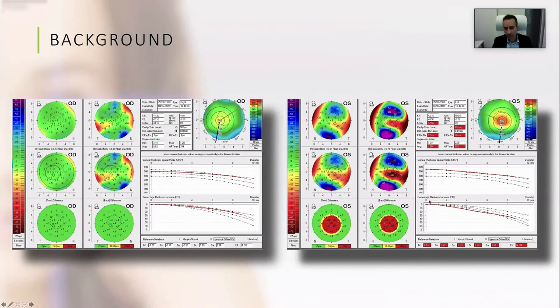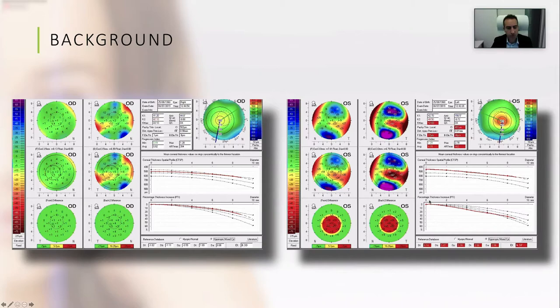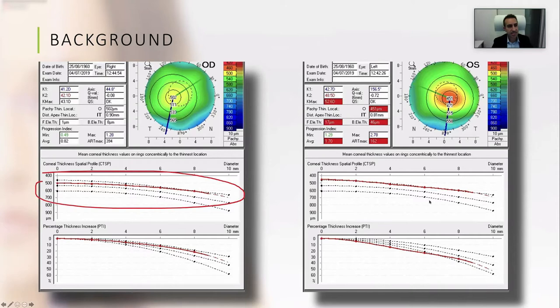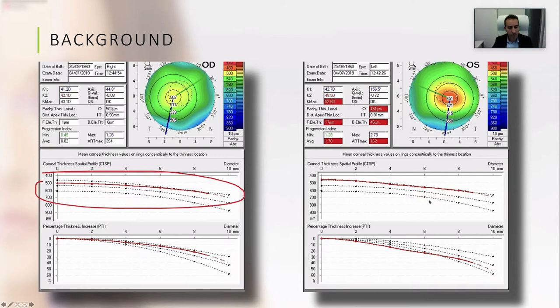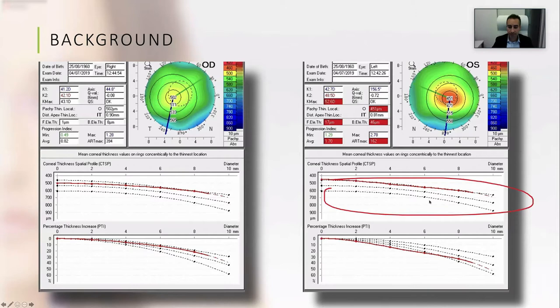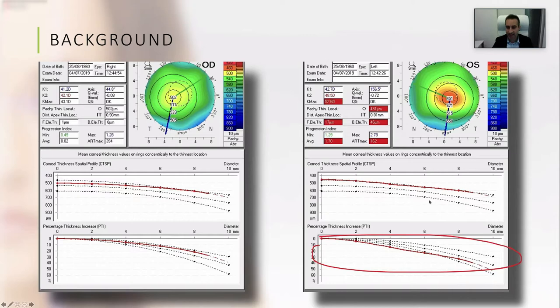We are all familiar with the thickness progression reports as published and promoted by Belin and Ambrósio. I think they are great reports and they do help a lot, but I always feel there is something that could be improved. In a keratoconic patient with the right eye minimally involved and the left eye much more severely involved, looking at the right eye's thickness progression gives us not much information, while in the left eye, the curve deviates slightly, skews, then levels off — but nothing major stands out.